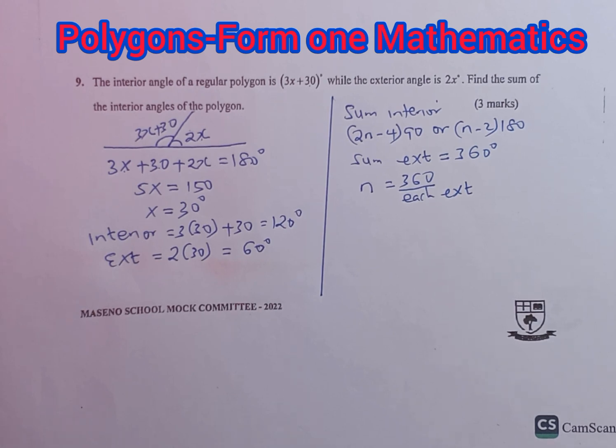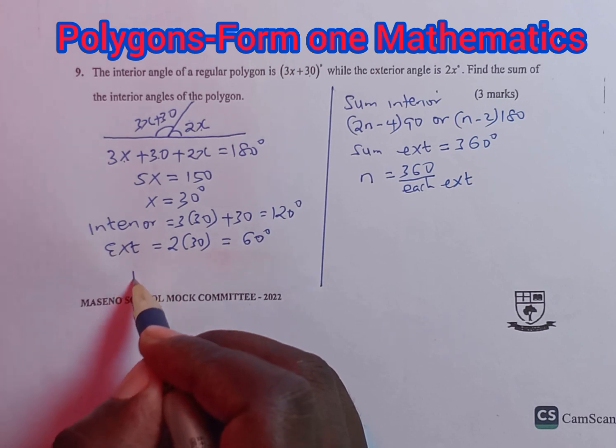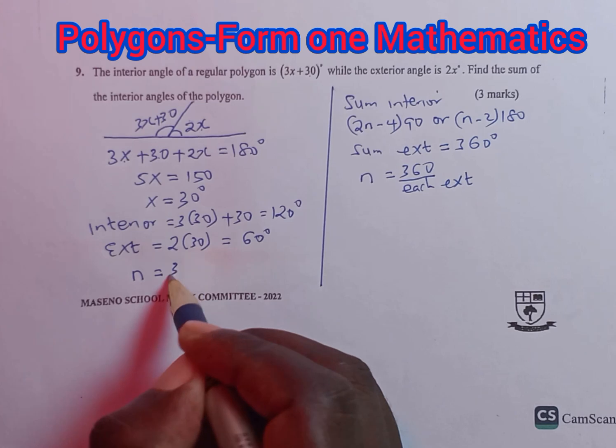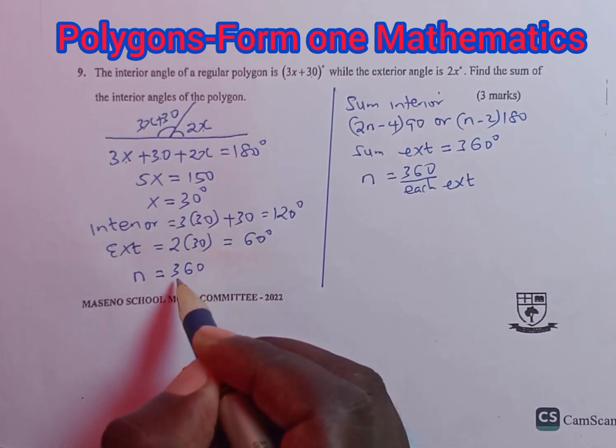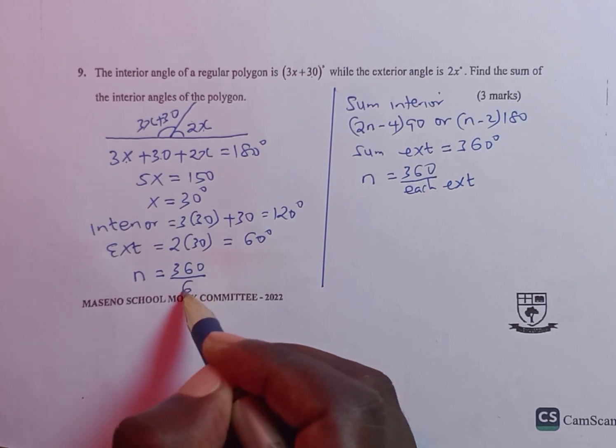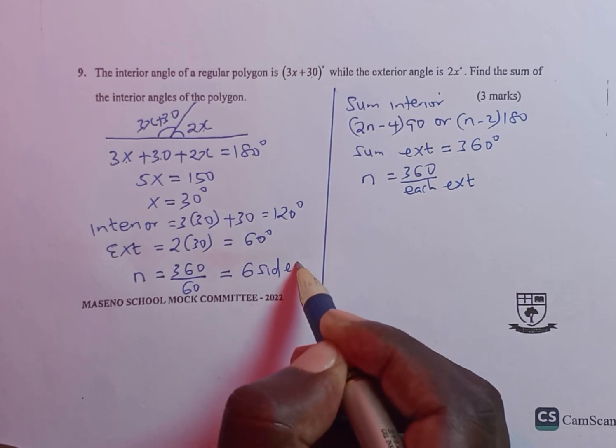Having gotten the exterior angle, we can use it to get the number of sides, denoted by n. To get the number of sides, we take the sum exterior, which is 360, divide by each exterior, which is 60 degrees, and this gives us 6 sides.